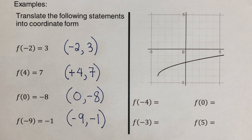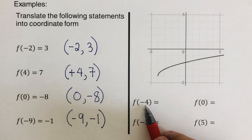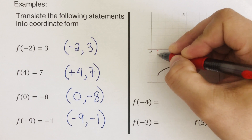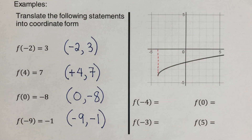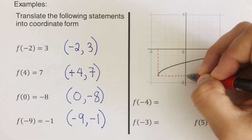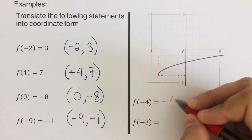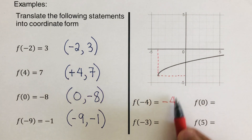We're given a graph and we're supposed to determine f of negative four. Whenever x is negative four — going to negative four on the graph — what is the value of the range? Tracing from x equals negative four, the output would be negative four. So when x is negative four, y is negative four.